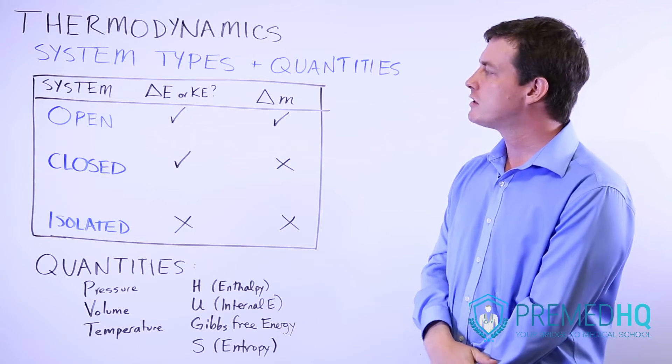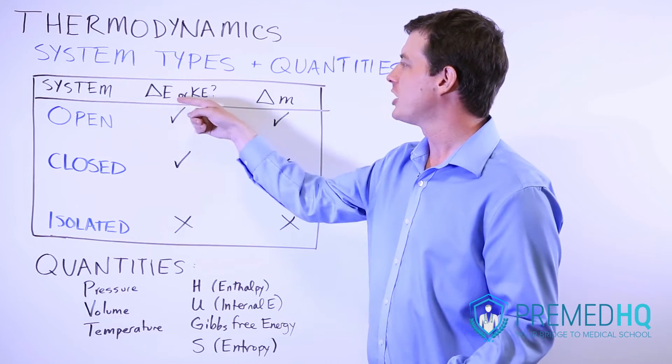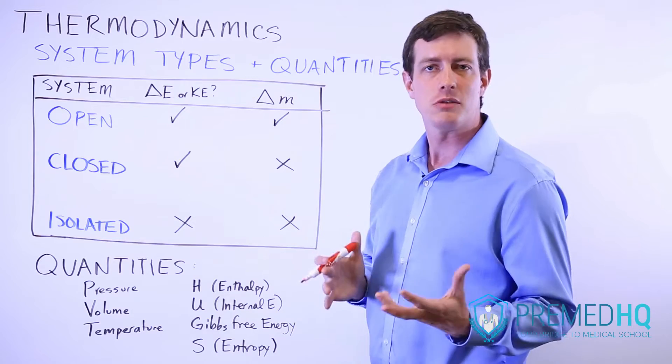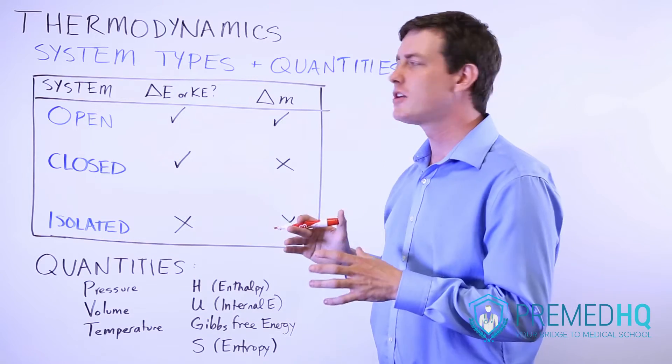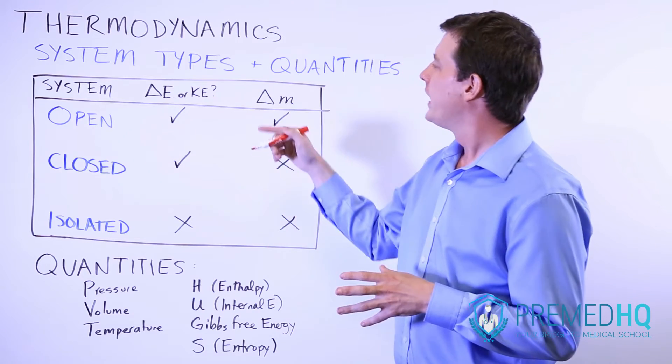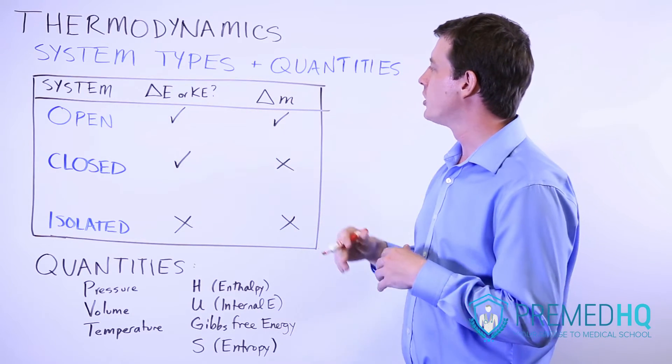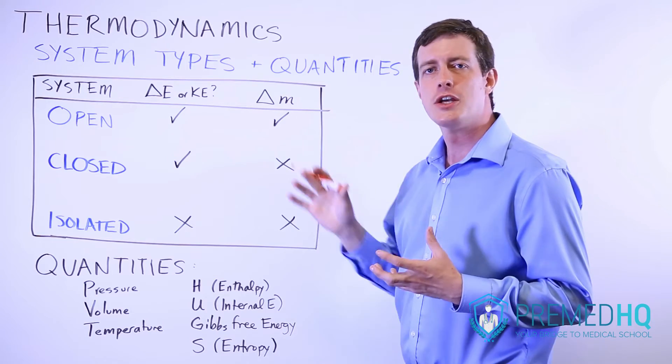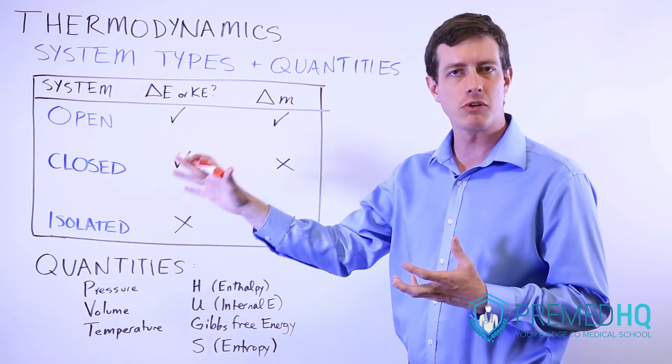The way that you define the types of systems is you look at whether they can exchange energy or kinetic energy with their surroundings, so whether the system can gain or lose forms of energy, and whether or not they can undergo a change in matter, whether they can exchange matter or mass with their surroundings.